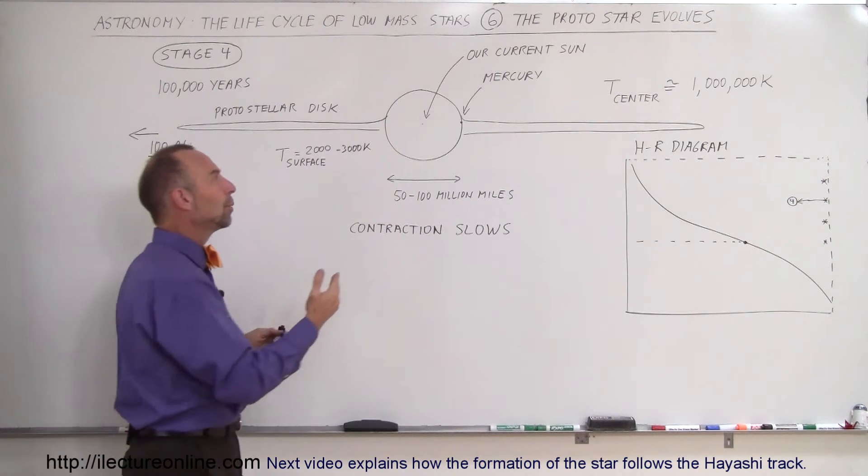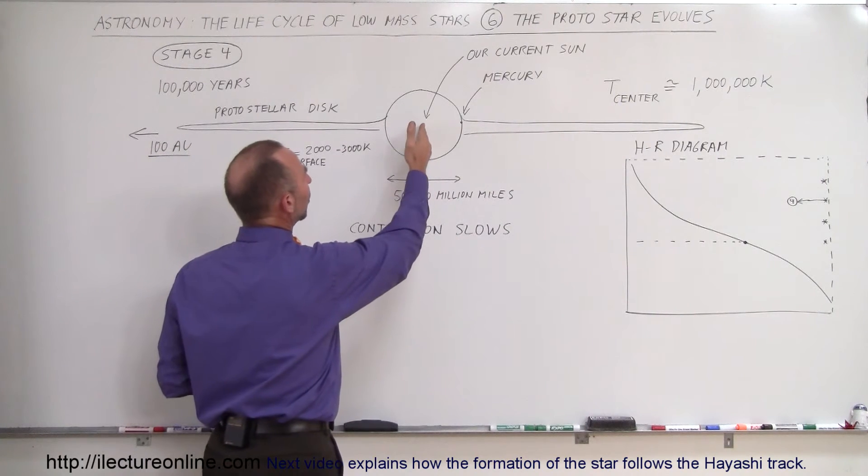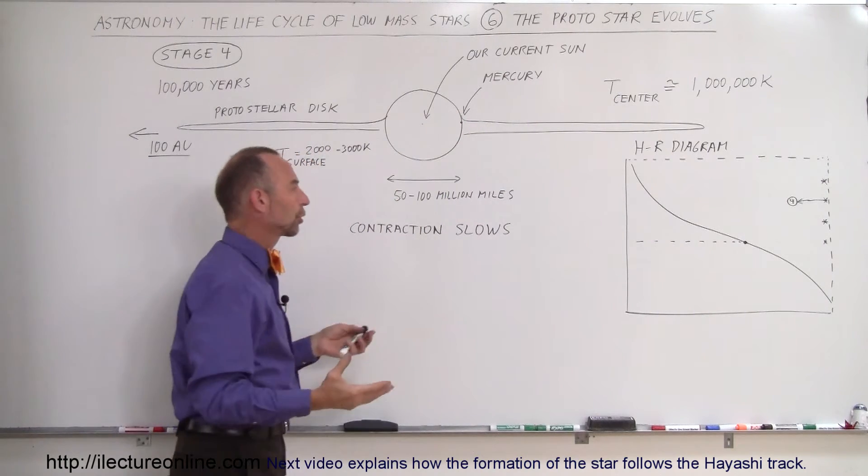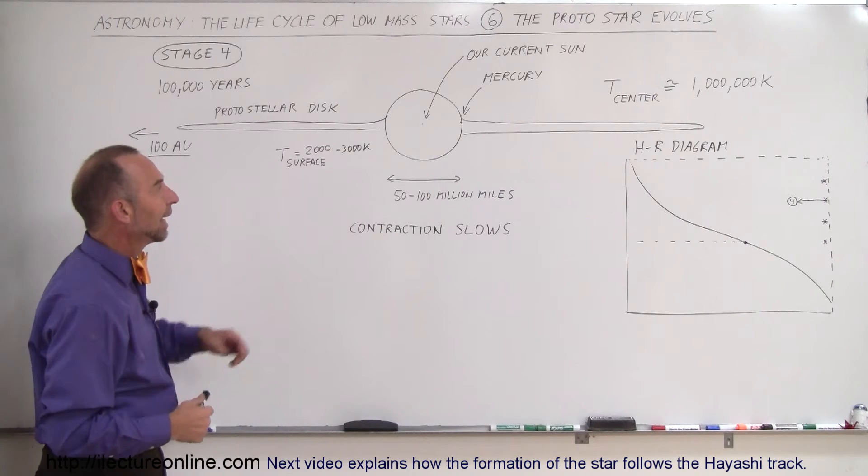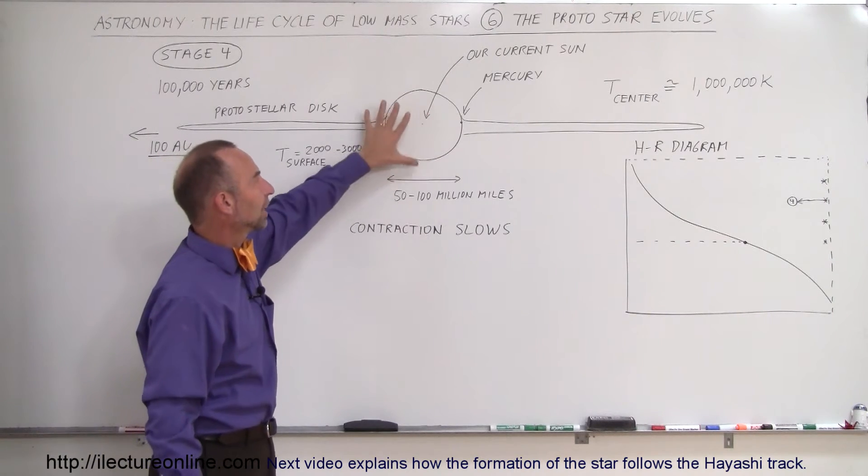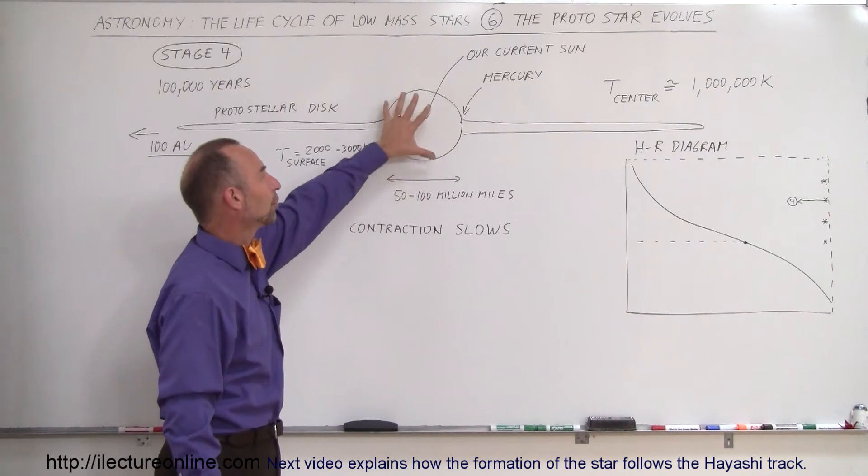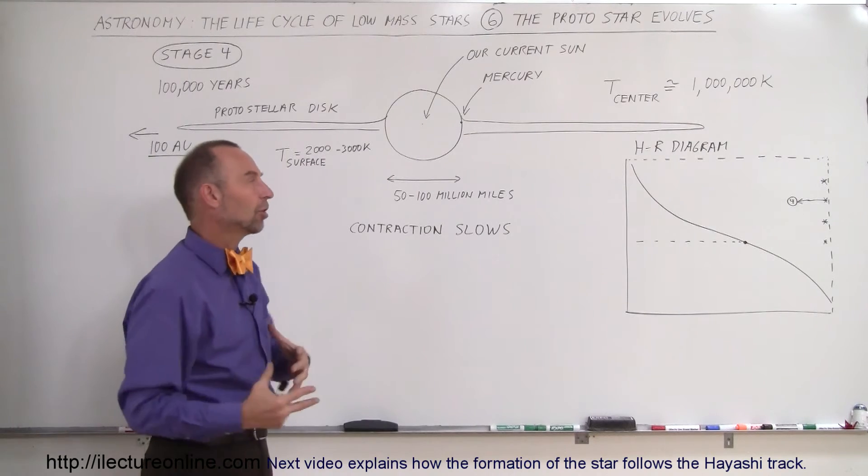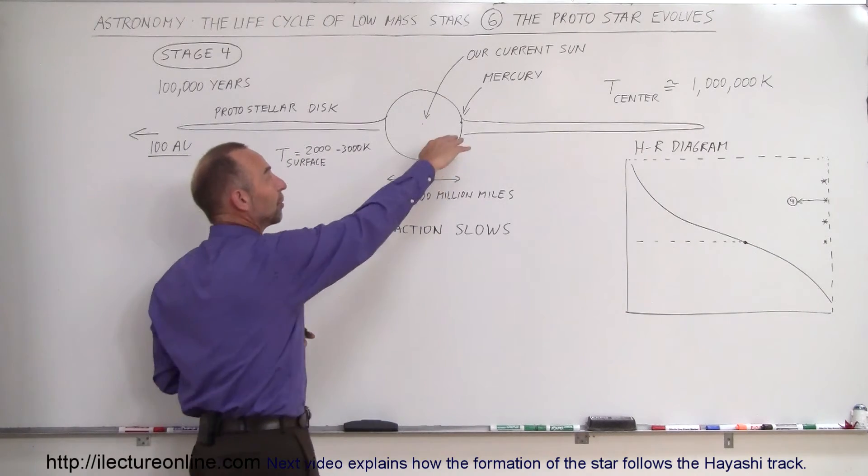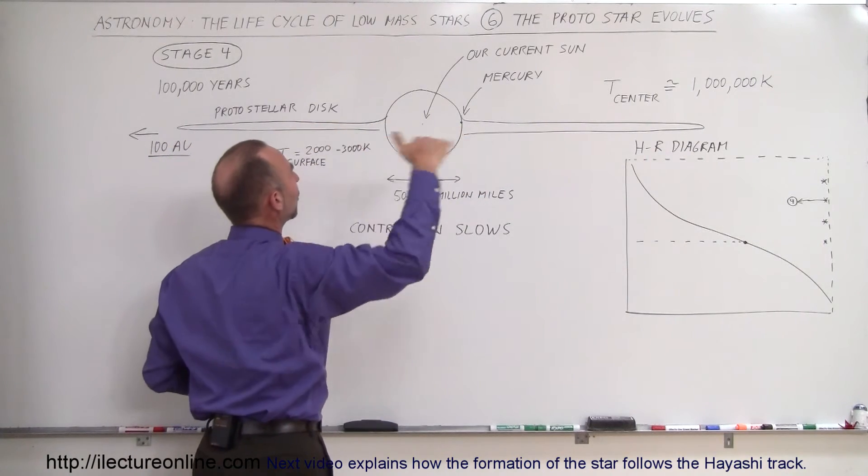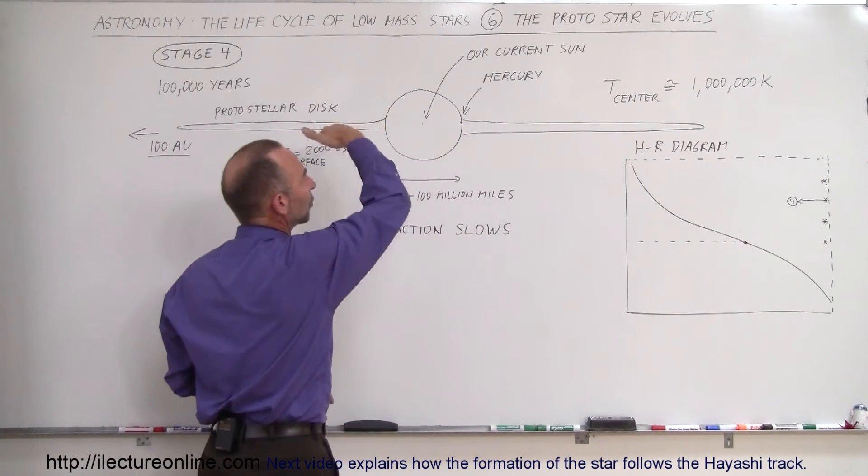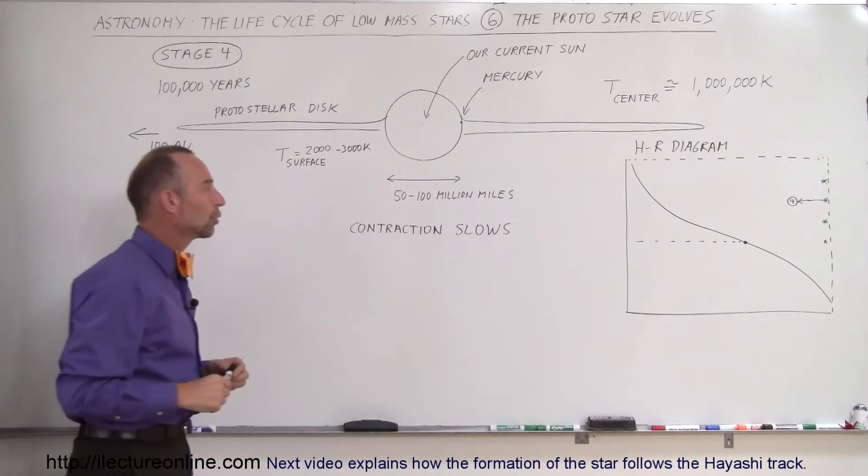At this point, we would say that the size of the star, the radius of the star, would go out to about the orbit of Mercury. Let's say that it's about 50 to 100 million miles across. And if this was the current sun, you can kind of see the relative size of the protostar to the sun, much, much larger. Of course, at this point, the planet Mercury doesn't exist yet. It is still part of all the dust and gas that's floating around in this huge disk that's rotating around the protostar.